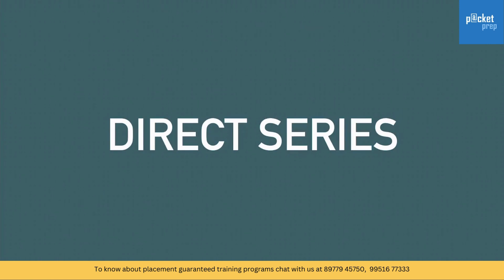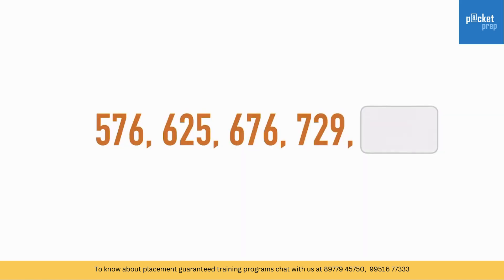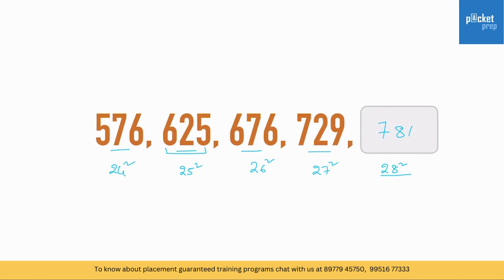The first type is a direct series. Look at these numbers: 576, 625, 676, 729. The first thing we observe is it's increasing. The key term here is 625, which is 25 squared. 576 is 24 squared, 676 is 26 squared, 729 is 27 squared. So the next number should be 28 squared, which is 784.